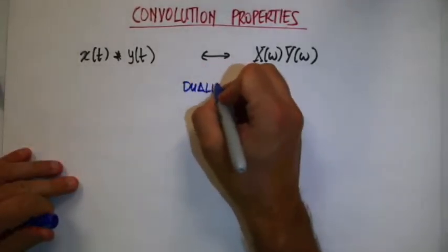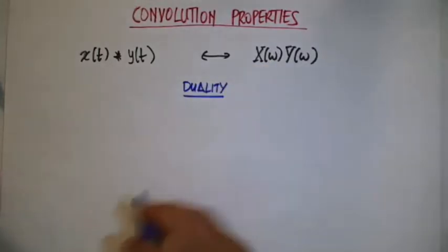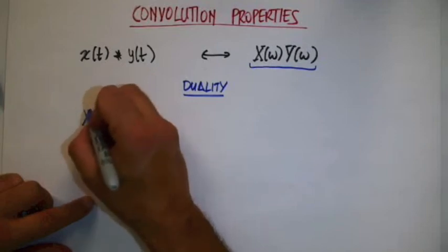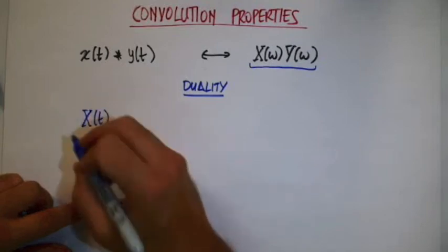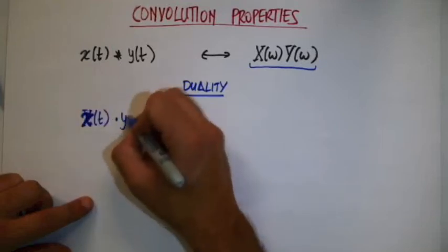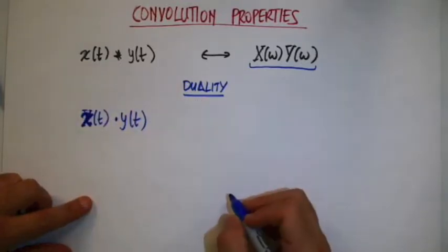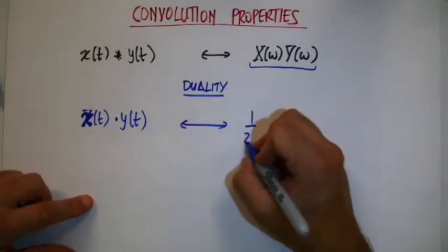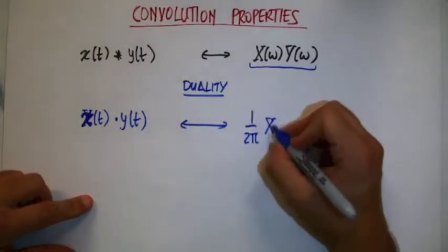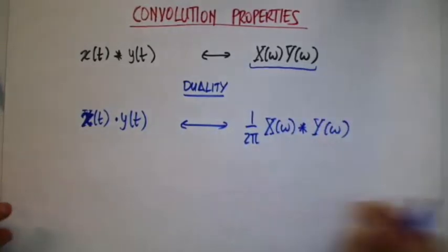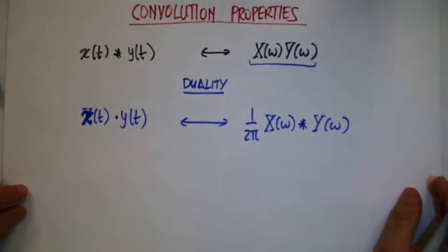And now we can exploit duality and show that we get the other pair, which is if I have the product of two functions, of two signals, the correspondent Fourier transform is equal to the convolution between the single Fourier transforms.